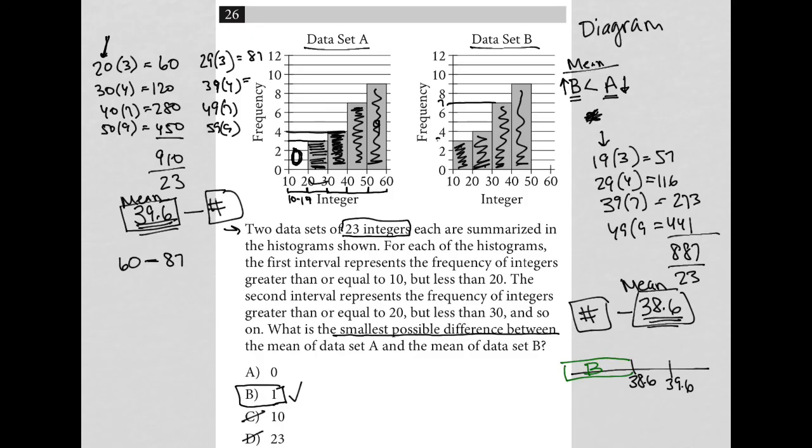But the range of values for data set A are 39.6 and greater. It would go this way, right? So there's definitely no overlap here. And therefore, the difference here of being one unit, answer choice B must be correct.